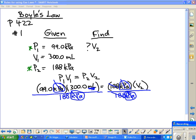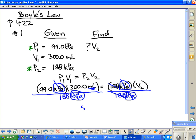So multiplying the 99.0 times 300 and then divide by 188, my calculator says 157.9. And we only have three sig figs here, so we're going to round that to 158. And so we have 158 milliliters is equal to V₂.